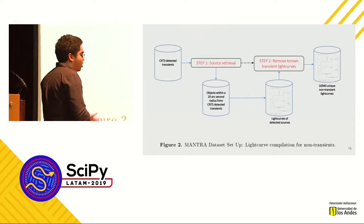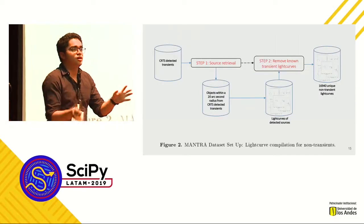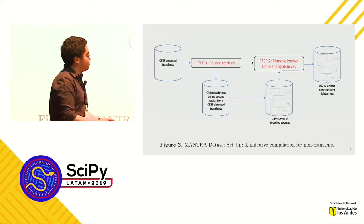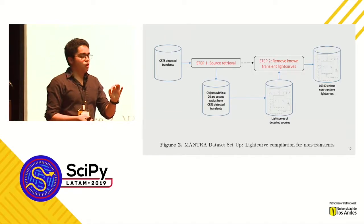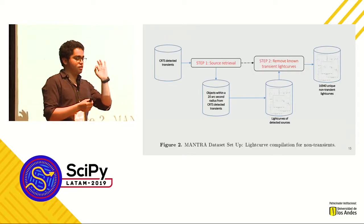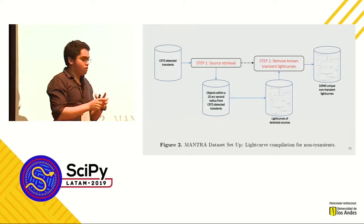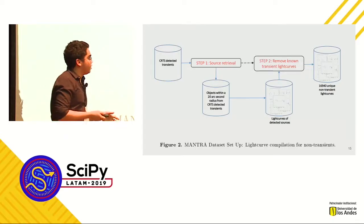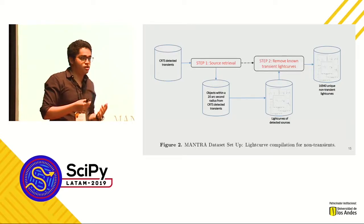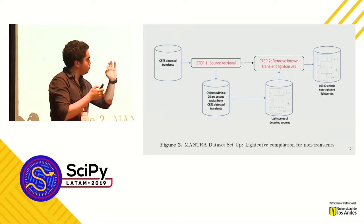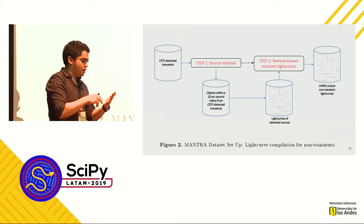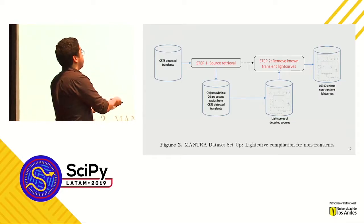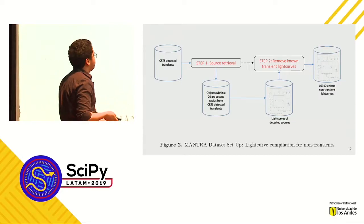Once we had that, that was half of the problem. In order to classify transients from non-transients, we had to mine the non-transients. What we did was locate each transient object in the sky and consider a neighborhood around it that would usually have other points of light. Statistically speaking, those points of light were really unlikely to also be transients. So we extracted their light curves from the database to mine the non-transients, and that's how we got 16,940 non-transients.